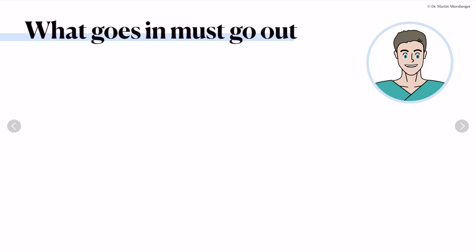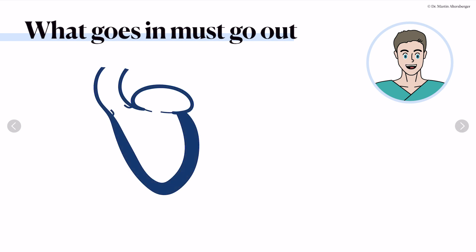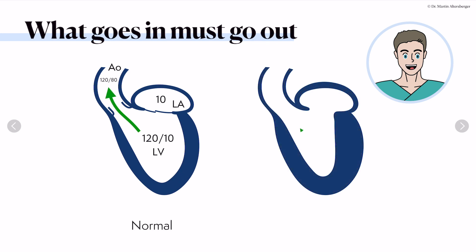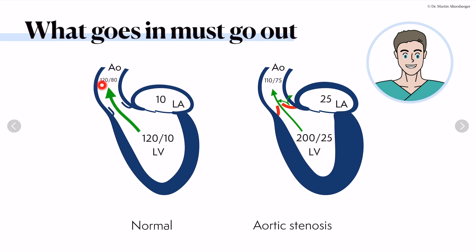It's basically what goes in must go out. What enters the ventricle has to leave the ventricle at some point. In a normal example, the systolic blood pressure is 120 mmHg in the ventricle, which is also displayed in the arterial system. The diastolic blood pressure in the ventricle is relatively low, as is the pressure in the left atrium. The diastolic blood pressure in the peripheral arteries is higher.